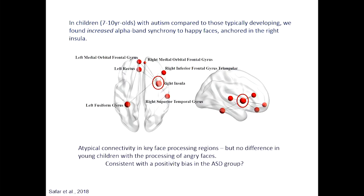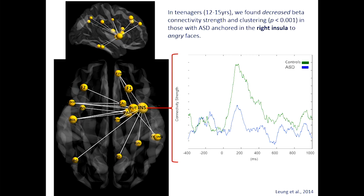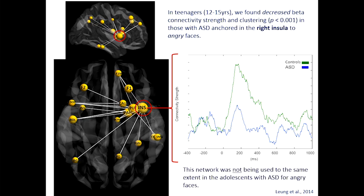In teenagers — the 12-to-15-year-olds — we found decreased connectivity in children with autism, but only to the angry faces. It's also anchored in the right insula, which is really important for salience and attention to important stimuli. The children with autism are not processing angry faces as well; there's no difference between the groups for happy faces — those have caught up. In adults, we saw similar things but in the gamma band, which is normal in terms of brain development — it keeps moving into higher frequency bands with age.